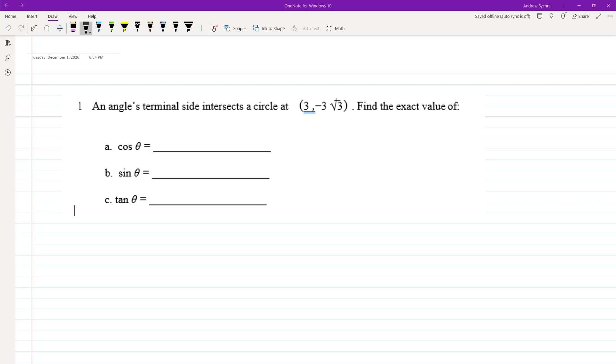Alright, so let's go ahead and find the terminal side of a circle with the given coordinates. You can think of this using xy. Essentially, our x value is 3 and our y value is negative 3 root 3.